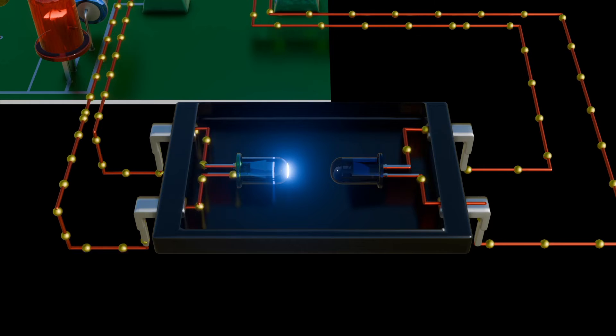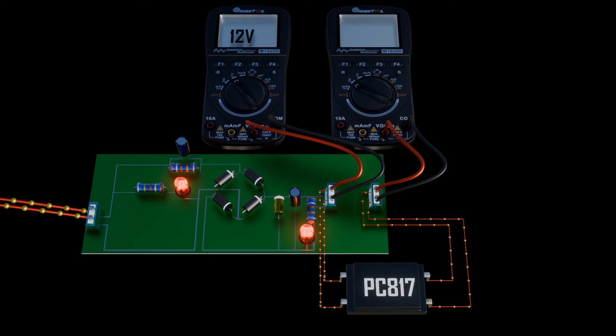Applications for this optocouplers, you will find them in microcontroller interfacing, where protecting the microcontrollers from high voltage in industrial or automotive environments. Also, they can be used in switching power supplies, which providing feedback from the secondary to the primary side without direct electrical contact. Also used in signal isolations, ensuring safe communication between high and low voltage parts of a system, such as medical equipment. Also used in isolating noise-generating components to prevent interference in sensitive part of the circuit.